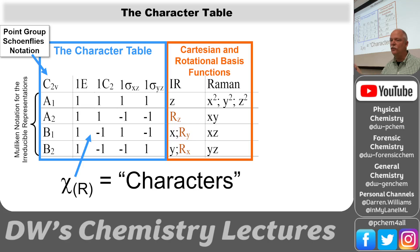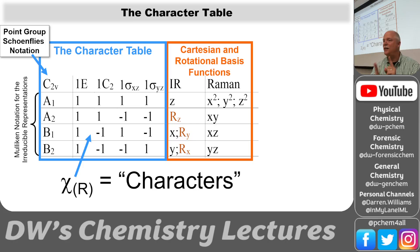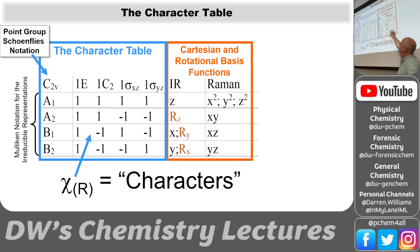Raman is a two-photon process — a photon comes in and exits. You have two waves: the oscillation of the incoming photon and the outgoing photon. If both oscillations are on the Z-axis, that's Z squared. But maybe the photon comes in, interacts with the vibration, and leaves on the Y-axis — that would be the YZ combination, or XZ if it leaves on the X-axis. Any combination of those two Cartesian coordinates would be a Raman scattering event.